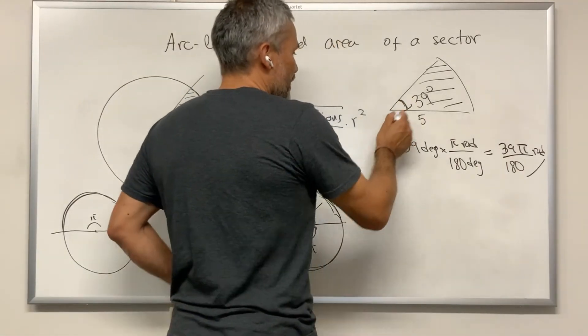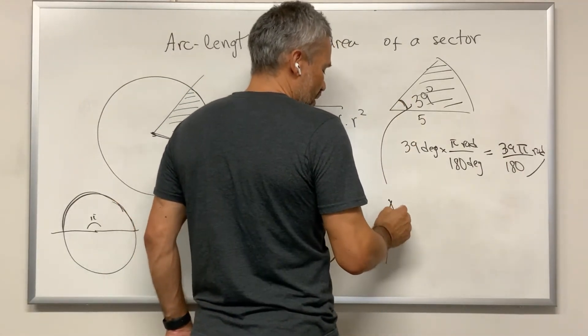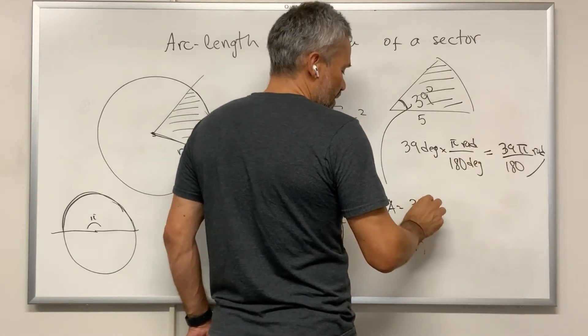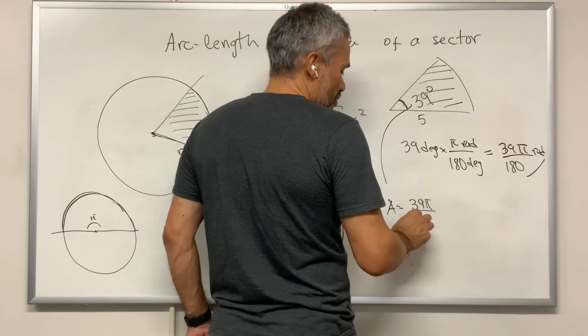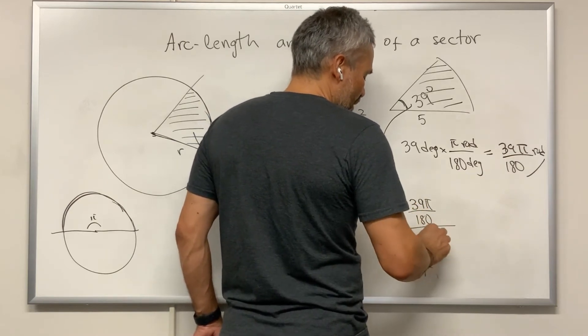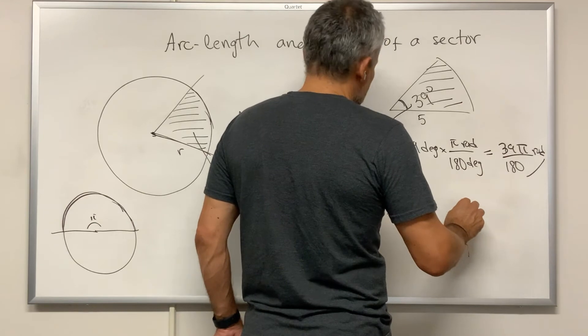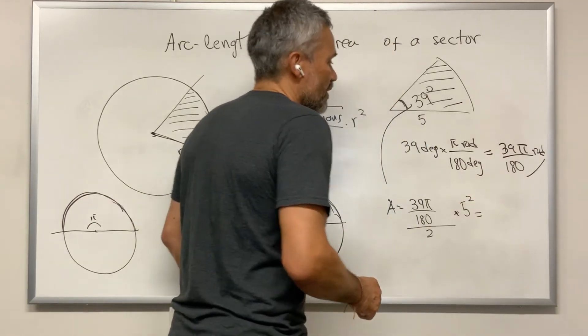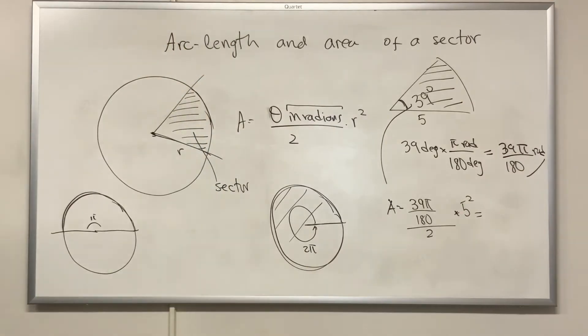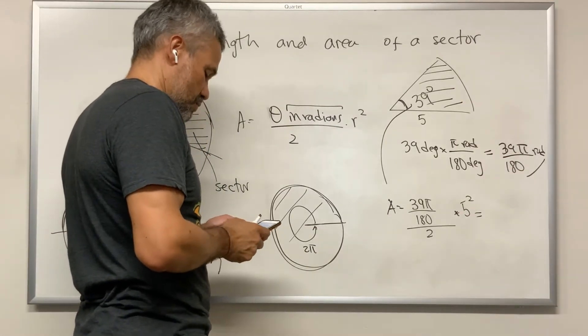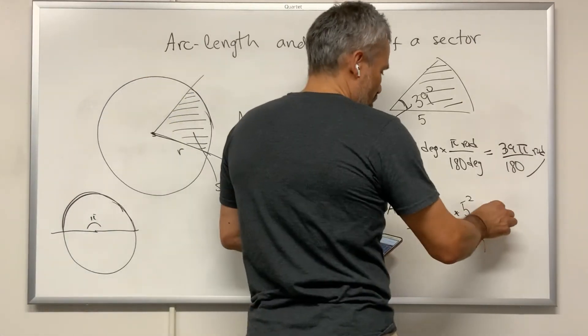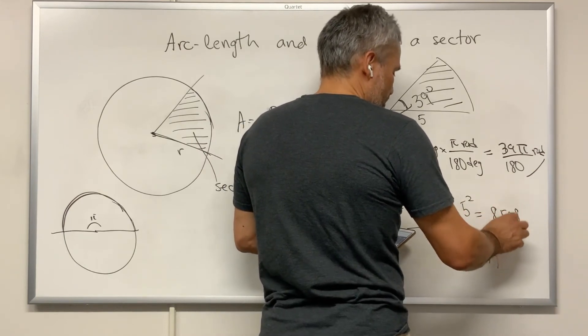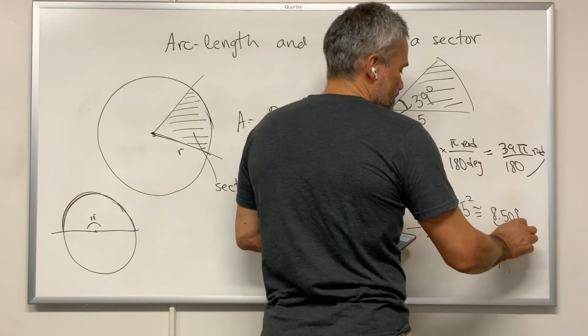The area of this would be, area is this angle, 39 times π over 180 divided by 2 times 5 squared. We can do this in the calculator and we will get 8.508, approximately 8.508.